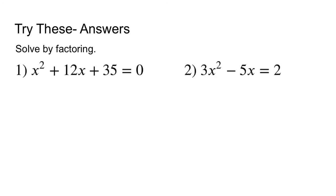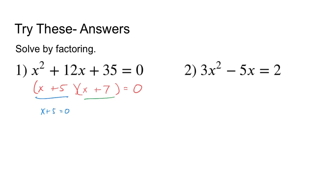We're going to solve these by factoring. For number 1, look for the pair of numbers that multiplies to give 35 and adds to give 12. That's 5 and 7 — 5 plus 7 is 12, and 5 times 7 is 35. Take each individual factor, set them equal to 0, and solve independently. We come up with answers of negative 5 and negative 7.